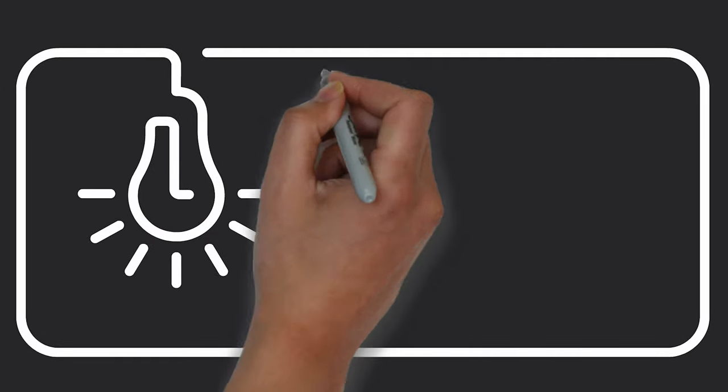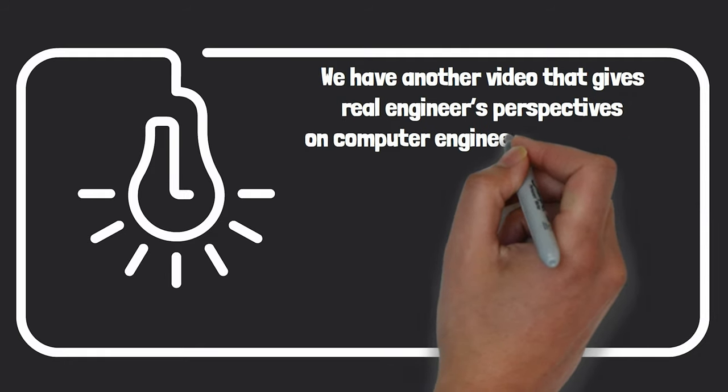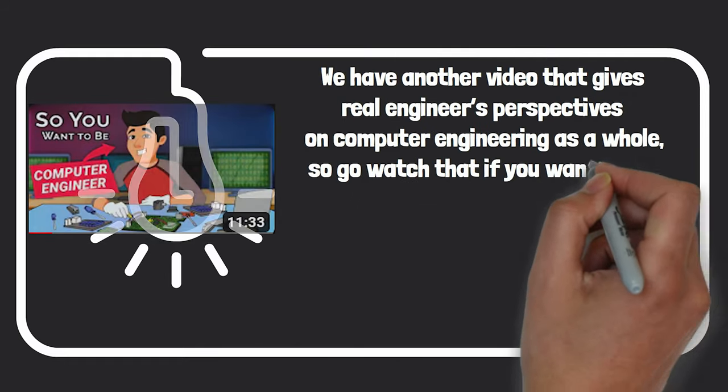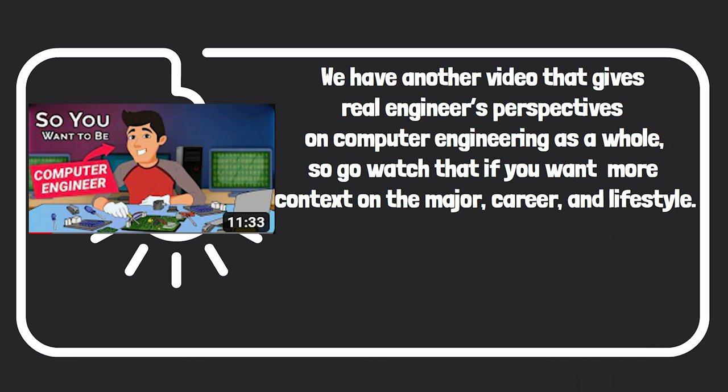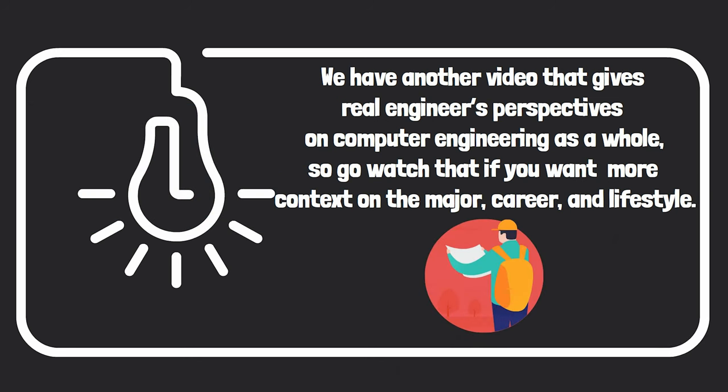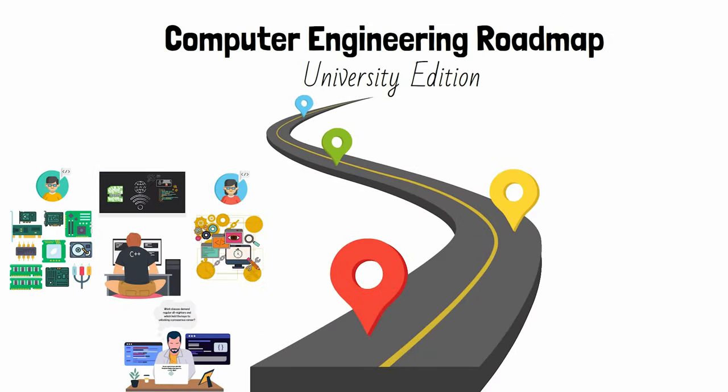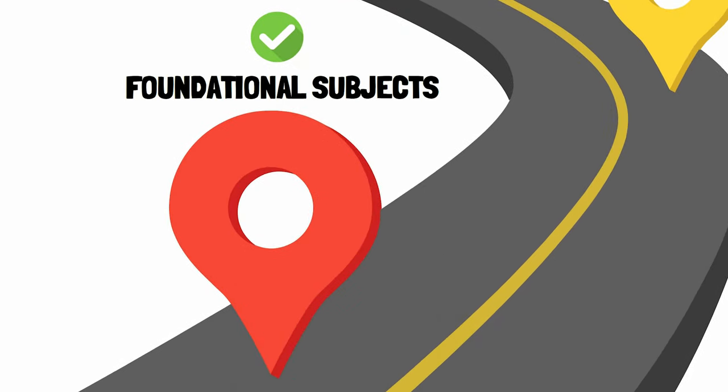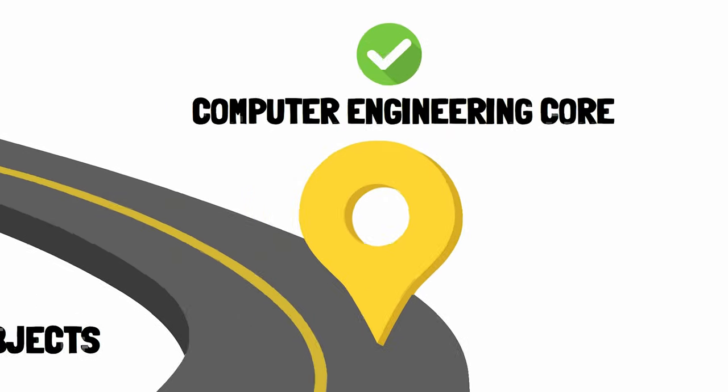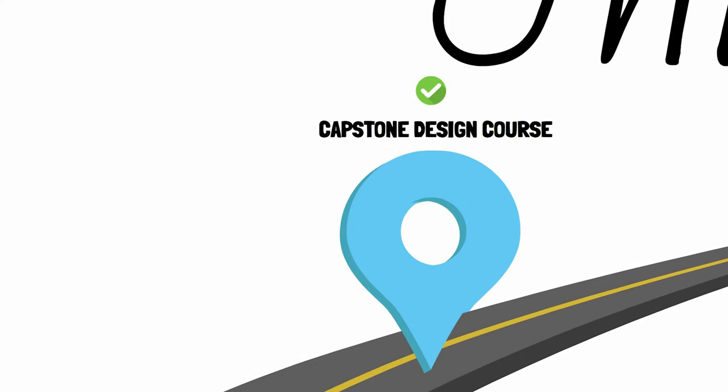A quick FYI, we have another video that gives real engineers perspectives on computer engineering as a whole, so go watch that if you want more context on the major, career, and lifestyle. But now it's time to map out the entire computer engineering degree so you know what you're signing up for. To simplify this, we've split up the Comp E curriculum into four different sections: Foundational Subjects, Computer Engineering Core, Concentration Paths, and the famed Capstone Design Course.